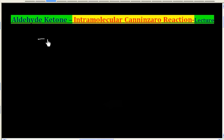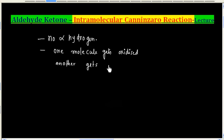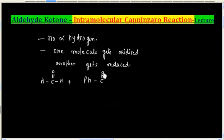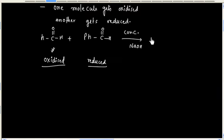You may remember, the Cannizzaro reaction is given by compounds that have no alpha hydrogen. In this reaction, one molecule gets oxidized and another gets reduced — that is, this is a disproportionation reaction. For example, if we have HCHO and PhCHO treated with concentrated NaOH, one gets oxidized and the other gets reduced, so we will have a salt of acid and an alcohol.